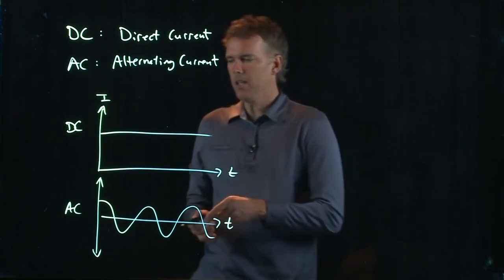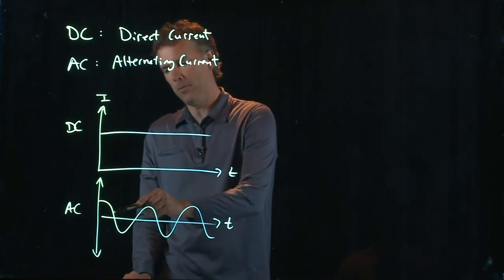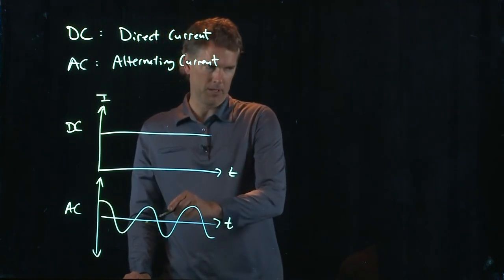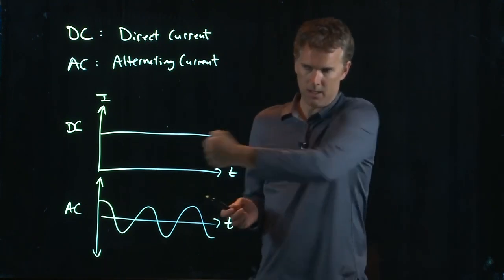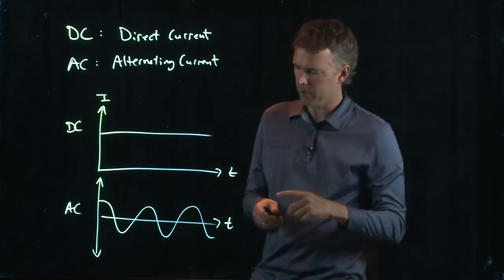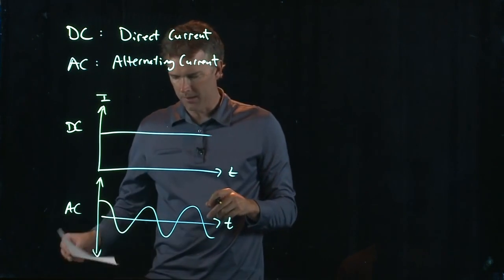And that AC means that it's going positive for part of the time, and then it's going negative for part of the time, positive and negative. And so the current is actually going this way and then that way, this way and that way. It's pushing and pulling all the time.